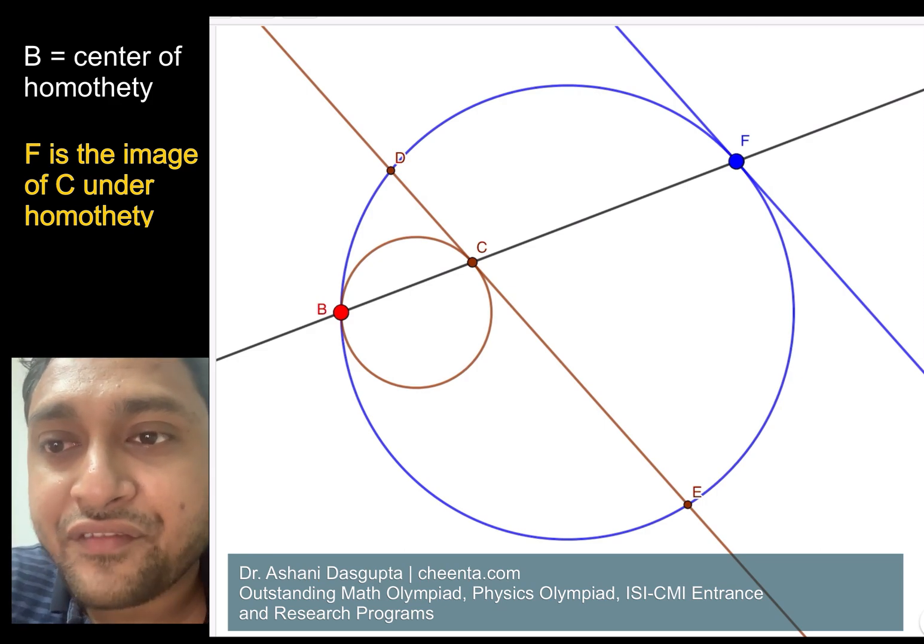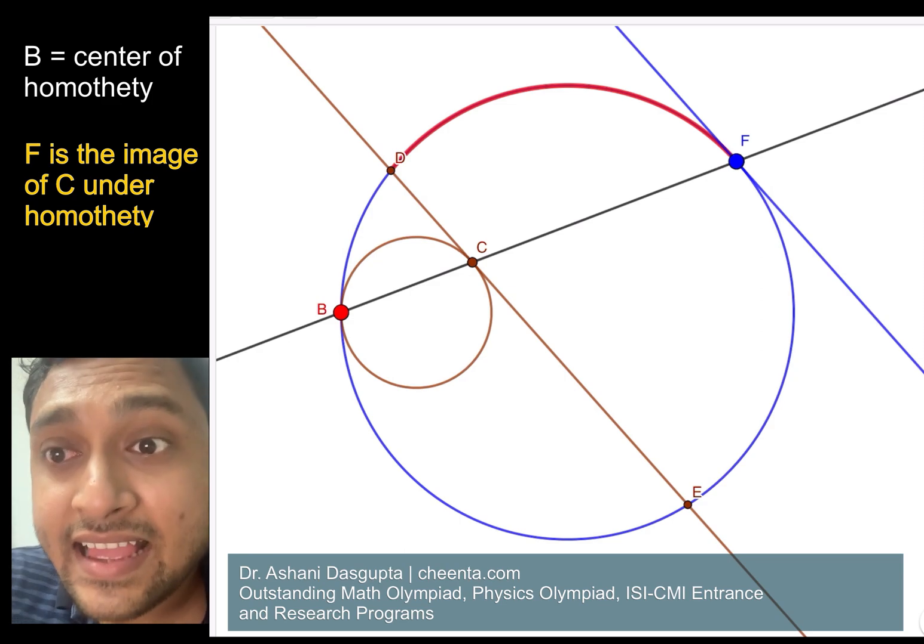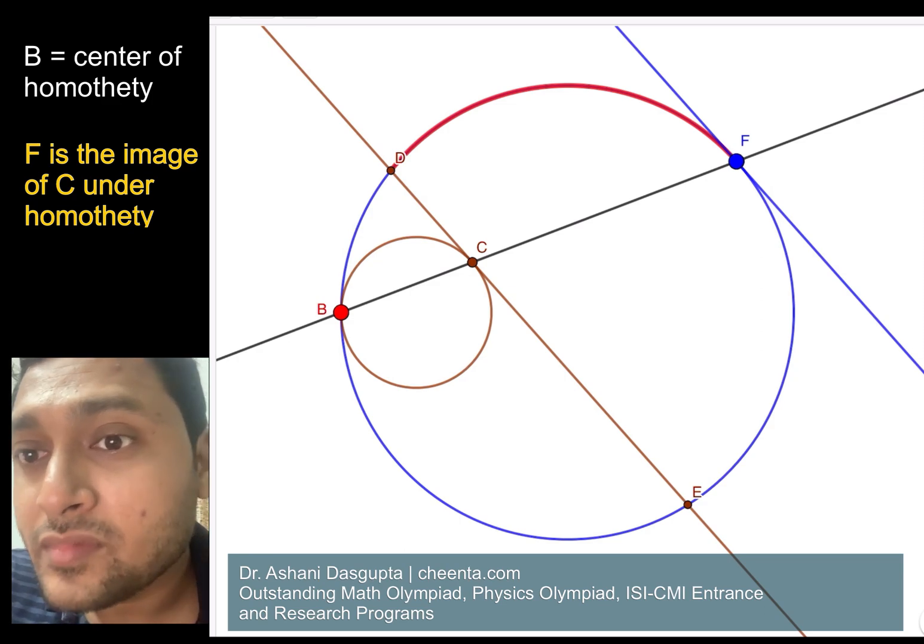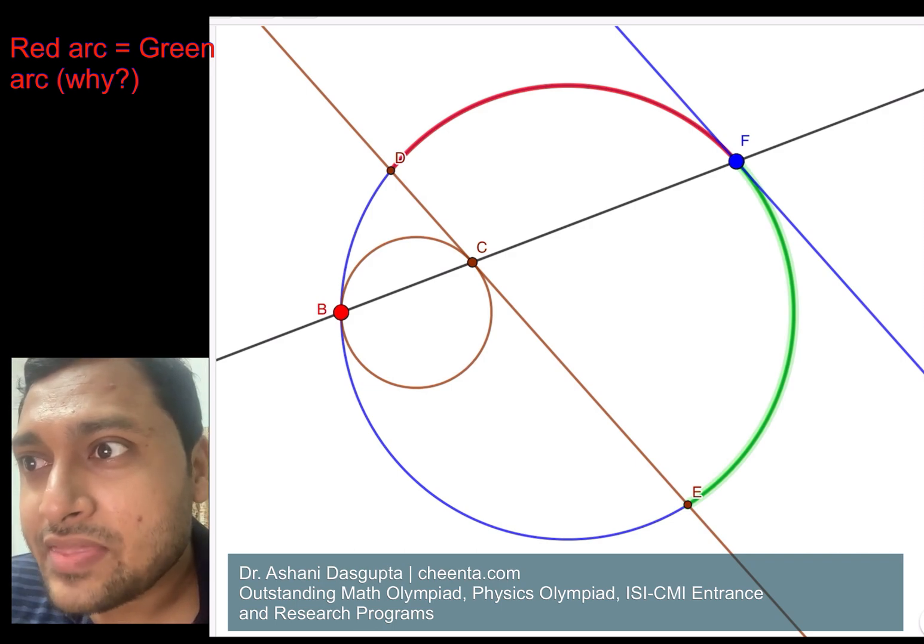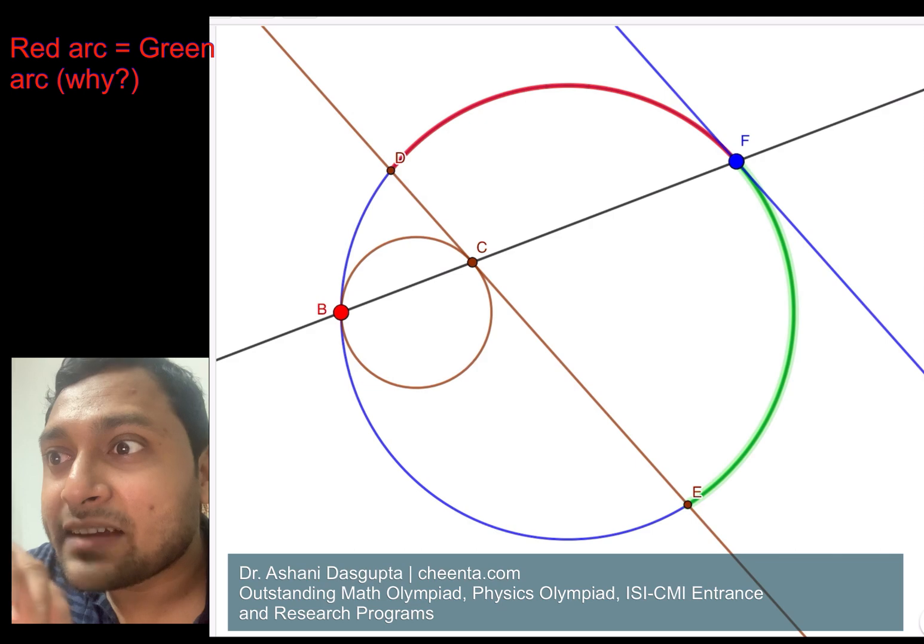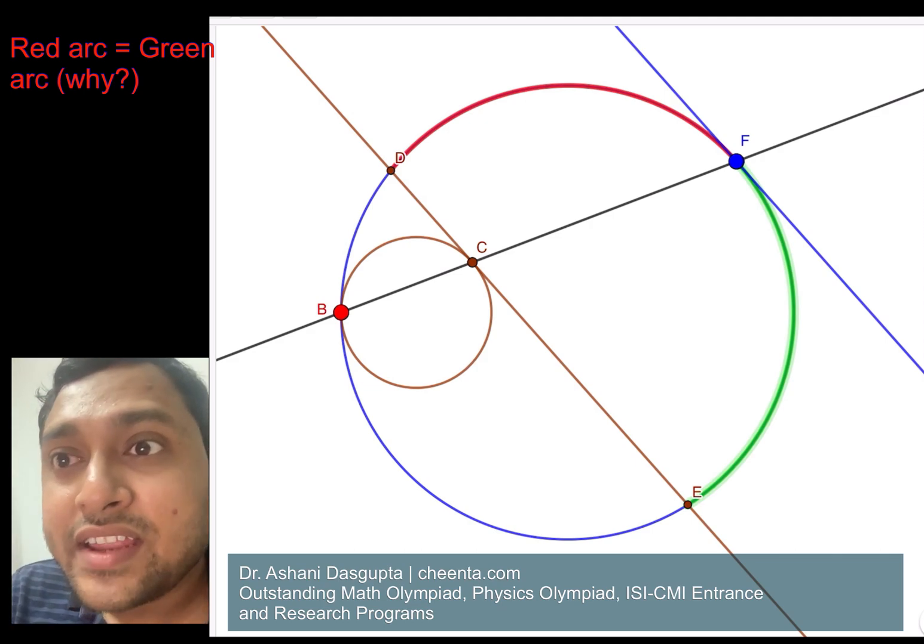The two arcs DF and EF. So DF is this red arc and EF is the green arc. Okay, so the claim is that the red arc and the green arc are equal in length.